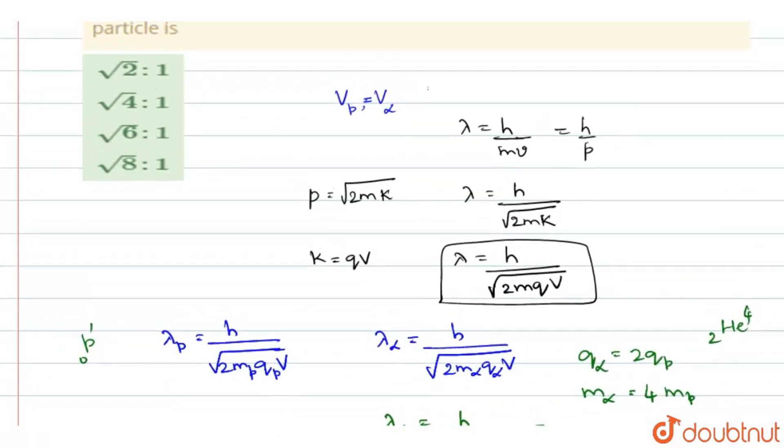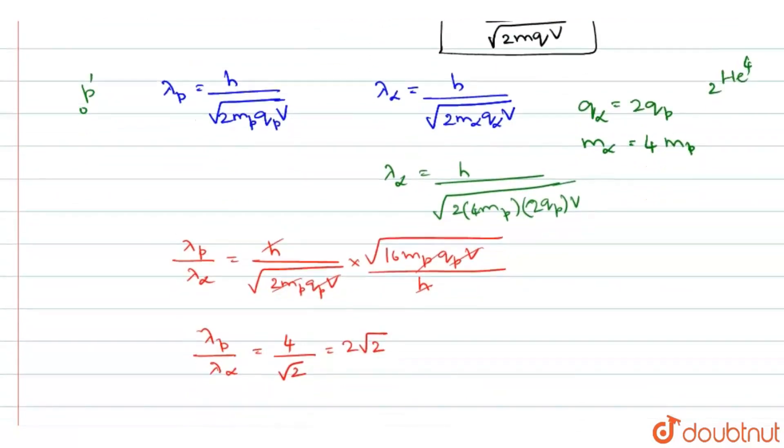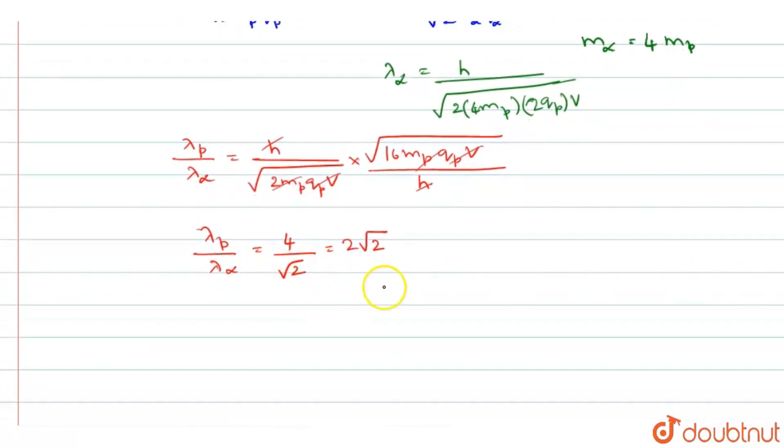So now when you see the options, it is 2 root 2. You can write this as 2 by root 2 or you can write it as 2 root 2 itself is the answer. 2 root 2 is to 1 is the answer.